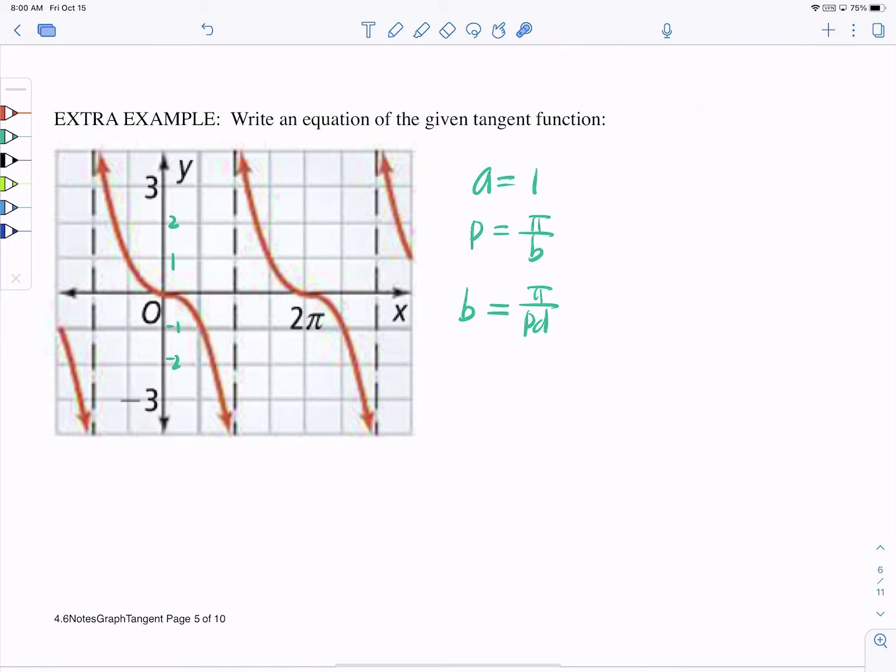It must be π, and it goes from π to negative π. You have one asymptote to the other. Aha, so the period must be 2π.